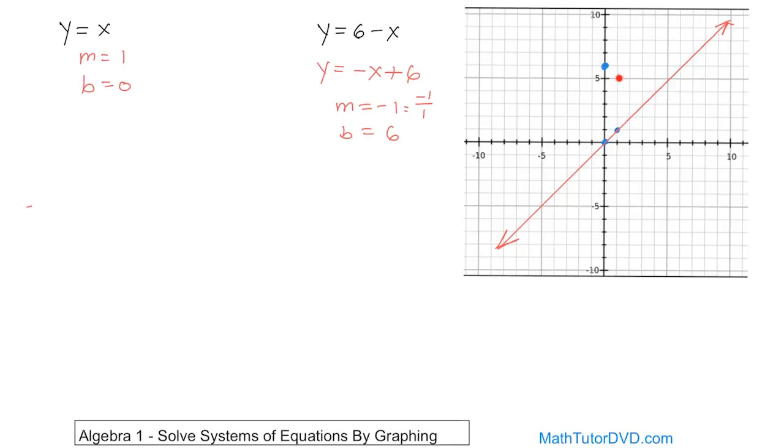So our second point is going to be here, down 1, and run over to the right 1 unit. And then once I have the two points in place, I can get a straight edge, put it through here, and then draw to the best of my ability through both of those points.